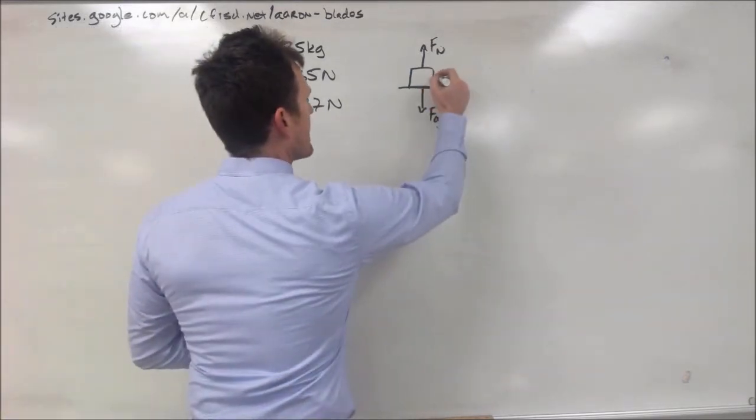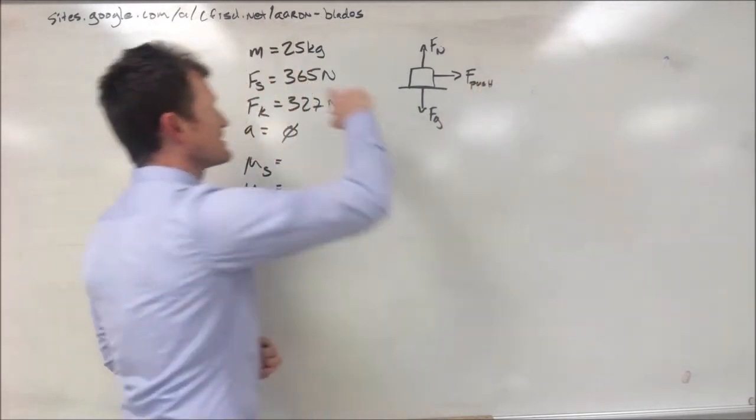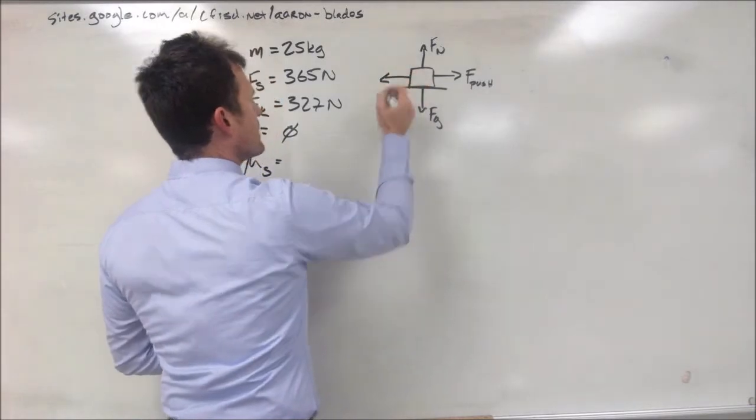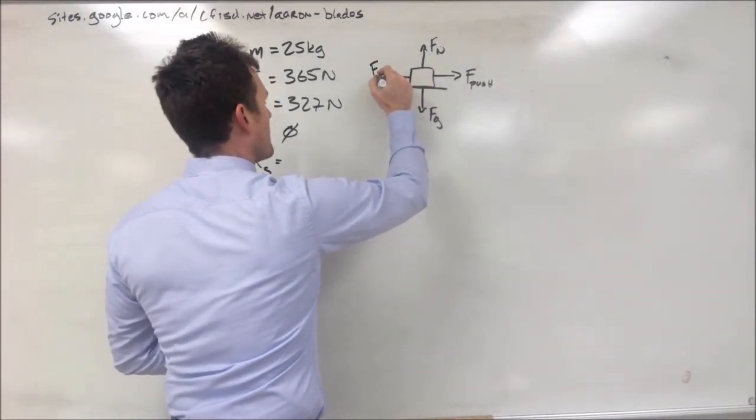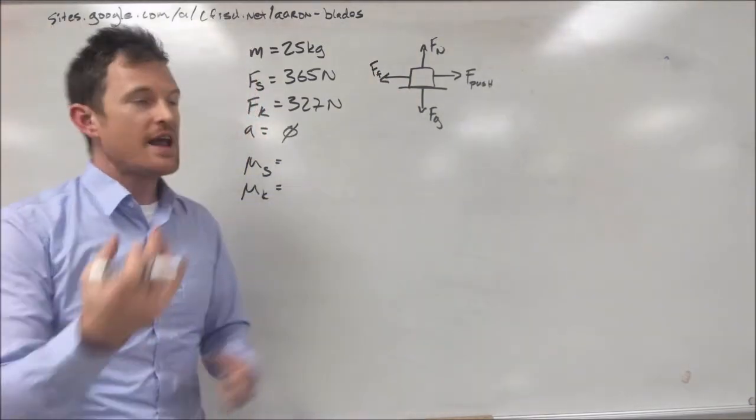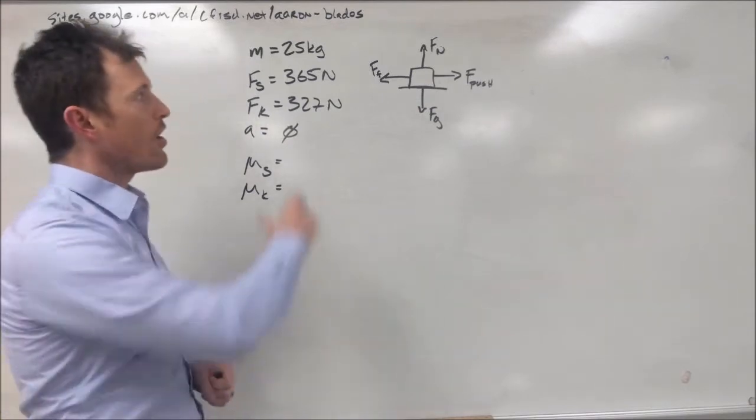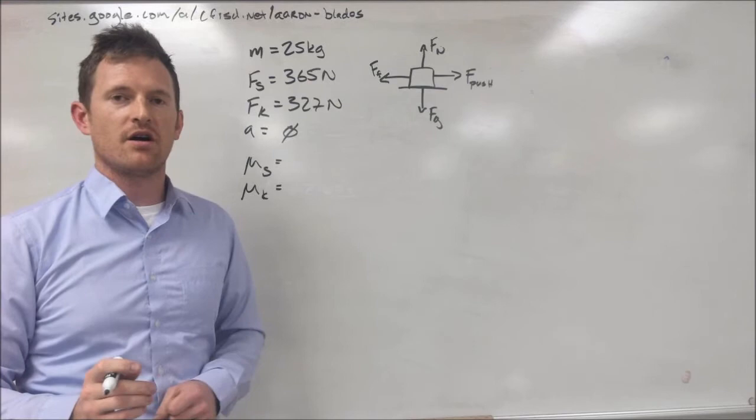Next, we have our force. I'm going to go ahead and write force push, because it's static at one point and then kinetic at another. And then, we are told that we have a friction force. So, let's go ahead and just write F, little f, friction. Now, what you have is a fully realized free body diagram. All of the forces are written in, and now we can start to solve our problem.